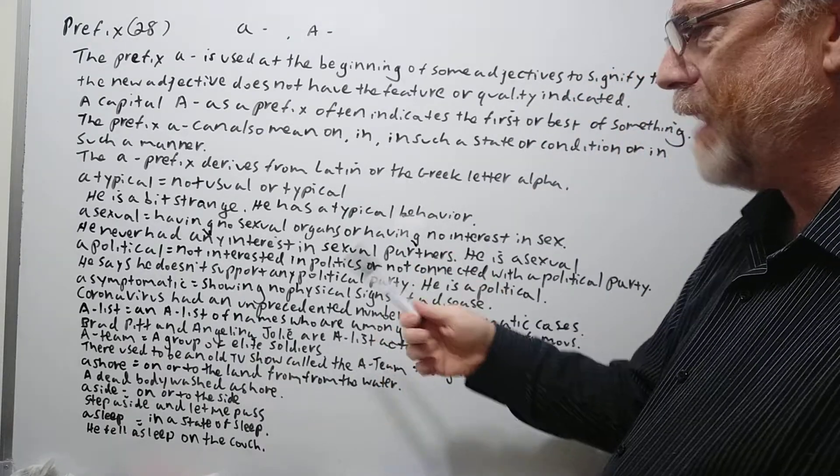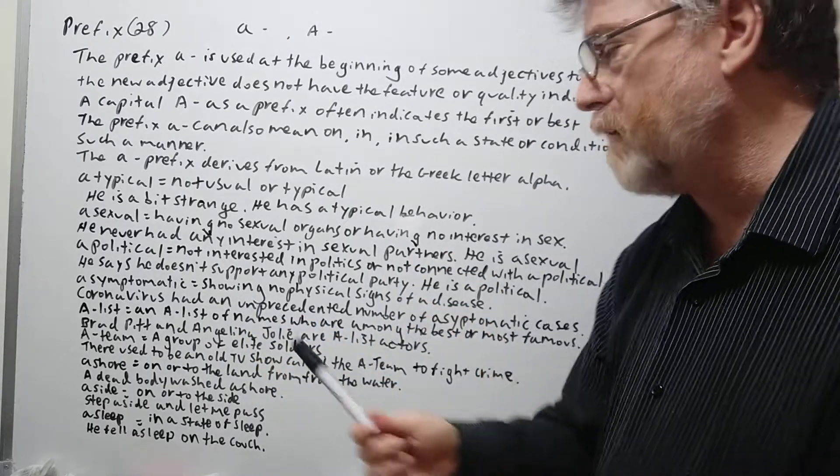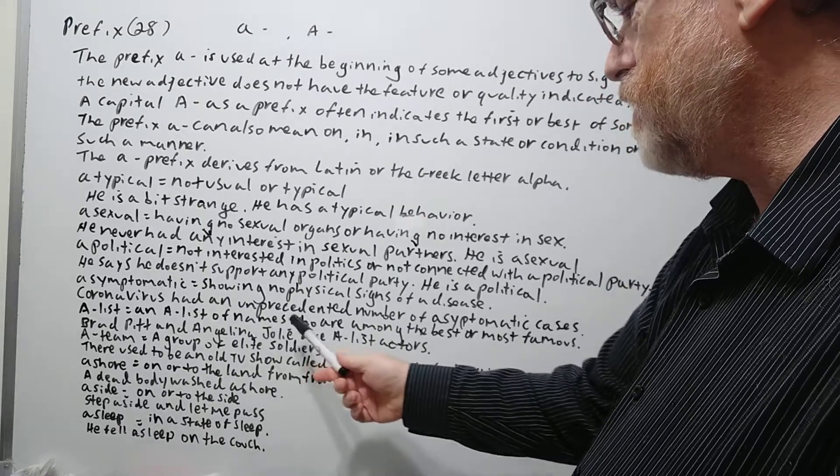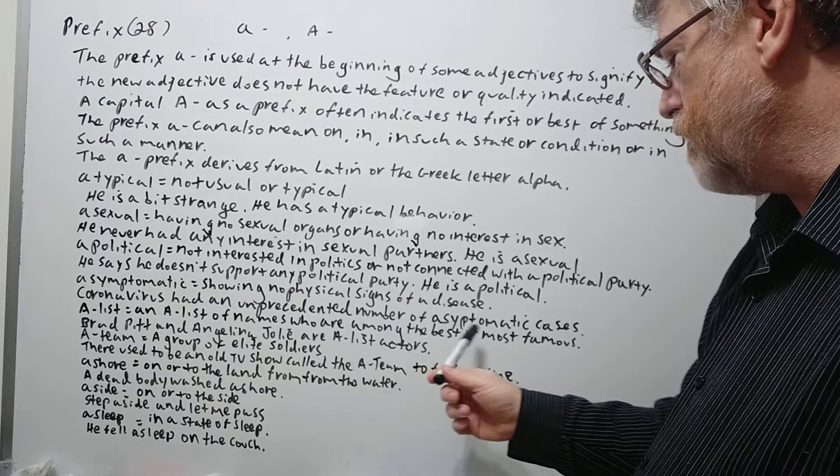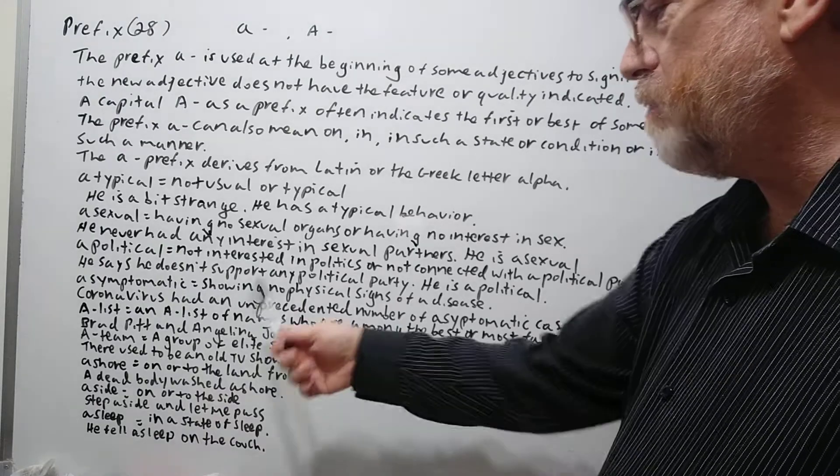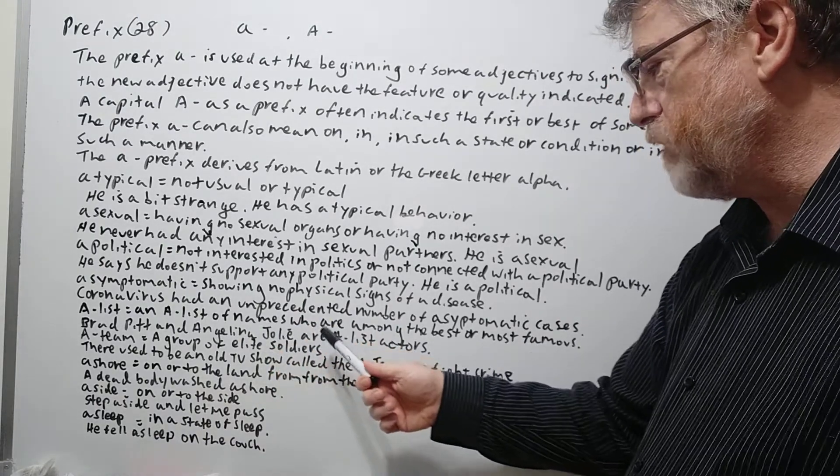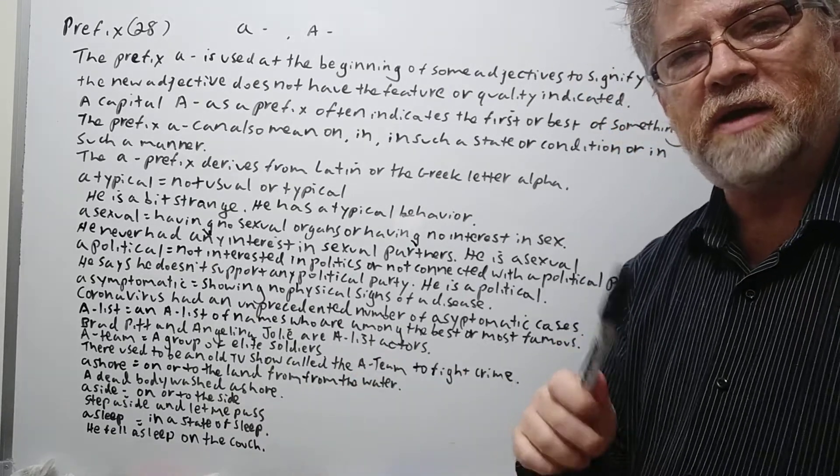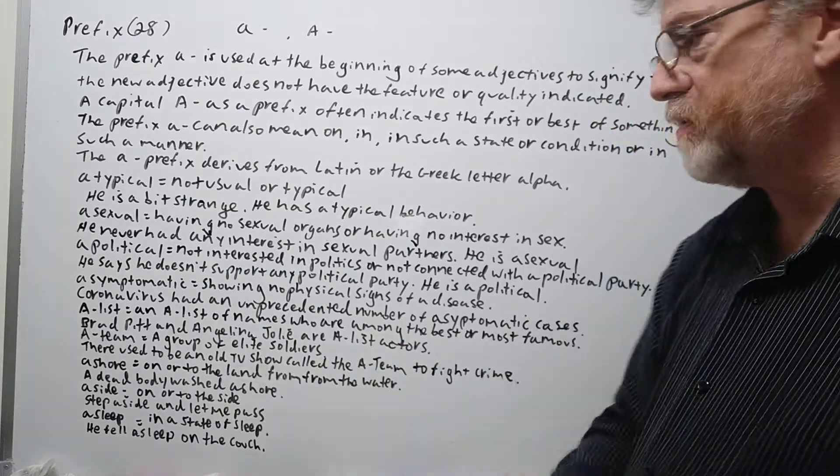Now with like the capital A. So A-list. This is a common one. We especially use it for celebrities. A list of names who are among the best or most famous. So Brad Pitt and Angelina Jolie are A-list actors. Yeah, we often hear that. Somebody, they could be among the A-list celebrities.